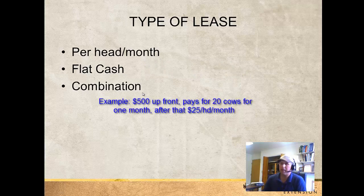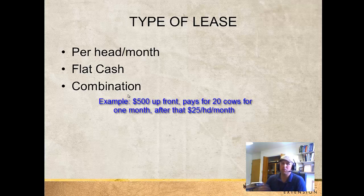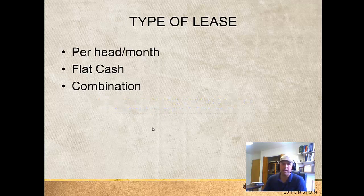There's also the combination agreement, which might say you pay half of what you anticipate the value of the land to be up front, and that's treated as a flat cash lease — not refundable if the land is not used. But once you meet a certain threshold with your head days, you pay an additional amount on top of that. So that's what a combination lease agreement might look like.